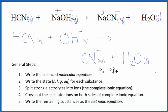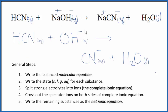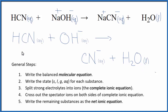This is our balanced net ionic equation for hydrogen cyanide plus sodium hydroxide. You'll notice that charge is balanced — we have a negative charge in the reactants and a negative charge on the products. And if you count the atoms up, they'll be the same on both sides as well, so mass is balanced. This is Dr. B with the balanced net ionic equation for HCN plus NaOH. Thanks for watching.